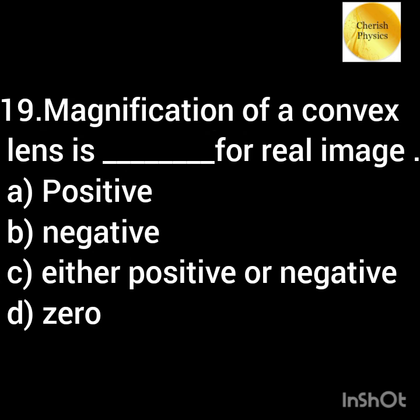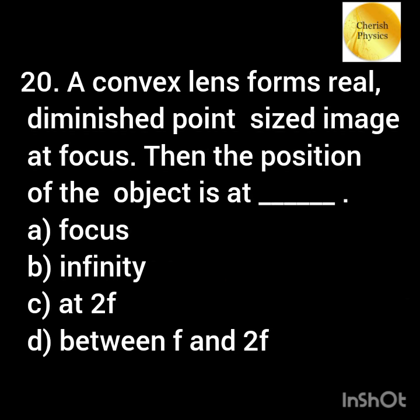Magnification of a convex lens. A convex lens forms a real diminished point-sized image at focus. Then the position of the object is at?